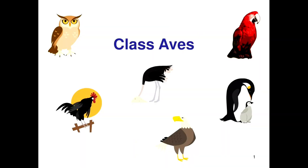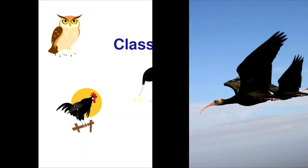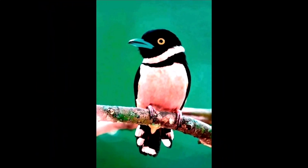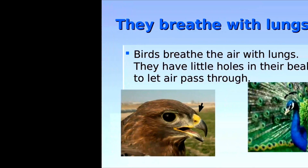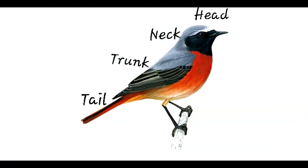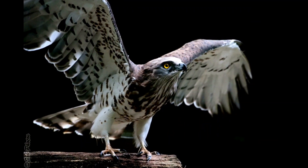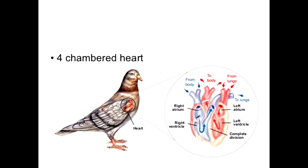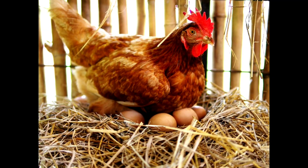Class Aves. Animals of Class Aves spend most of their time flying in air. Their body is covered with feathers. They breathe through lungs. Their body is divided into head, neck, trunk and tail. They have one pair of legs and one pair of wings for locomotion. They have a four-chambered heart. They reproduce by laying eggs, so they are oviparous animals.